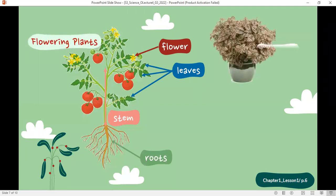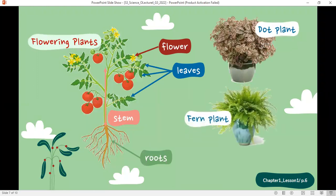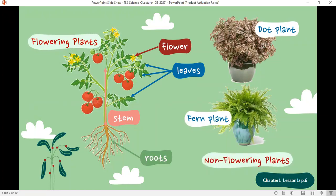While the dot plant and the fern plant, as we saw in the previous slide, are non-flowering plants. Why? Because they do not make flowers at all.